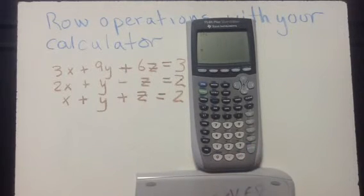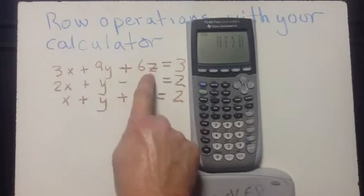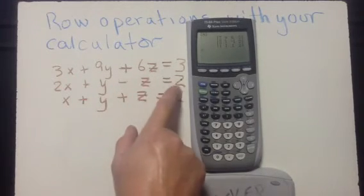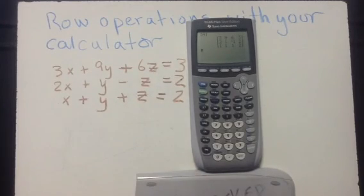And when I press A, then I get those numbers. Let's double check and see if it's right. 3, 9, 6, 3, 2, 1, negative 1 and 2, 1, 1, 1 and 2. Very good.